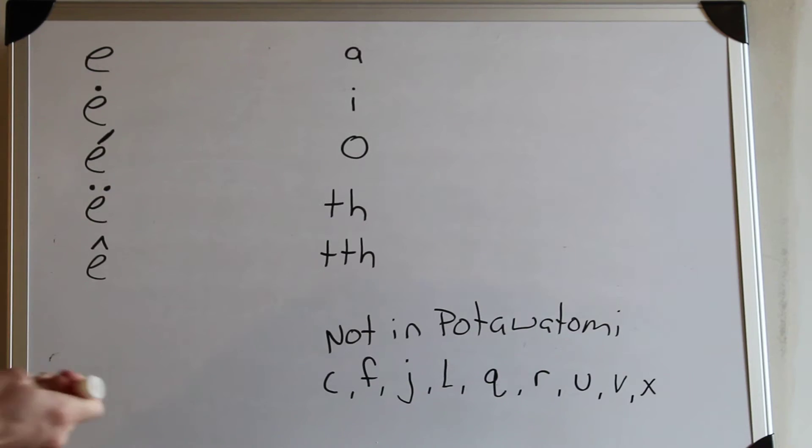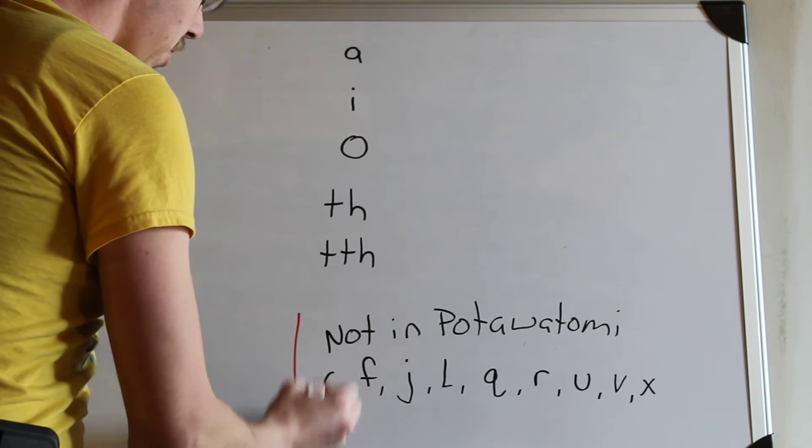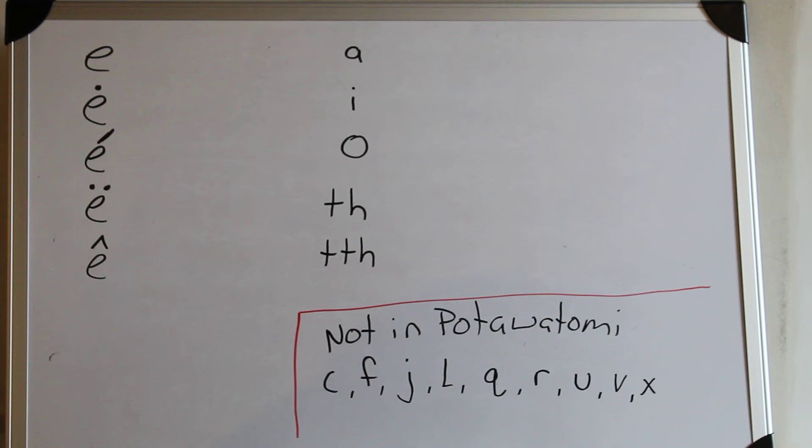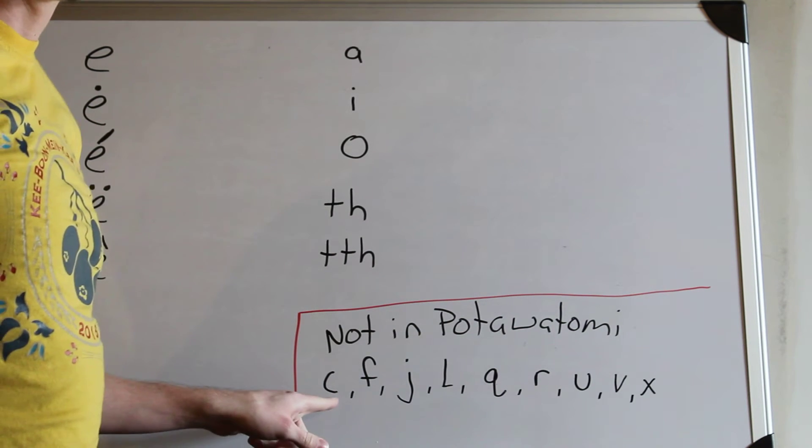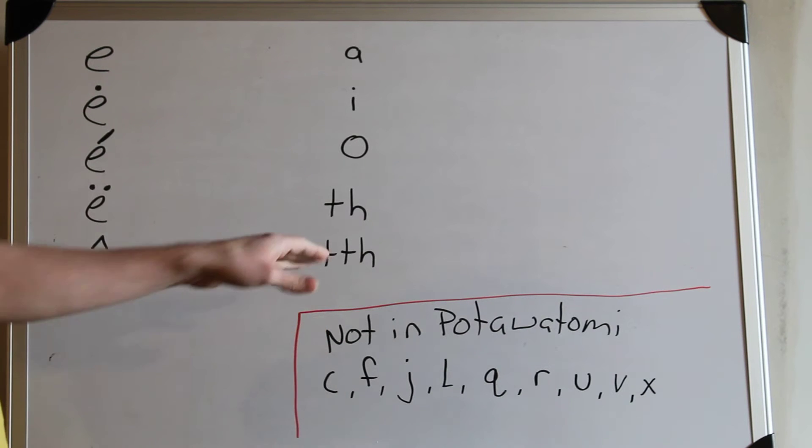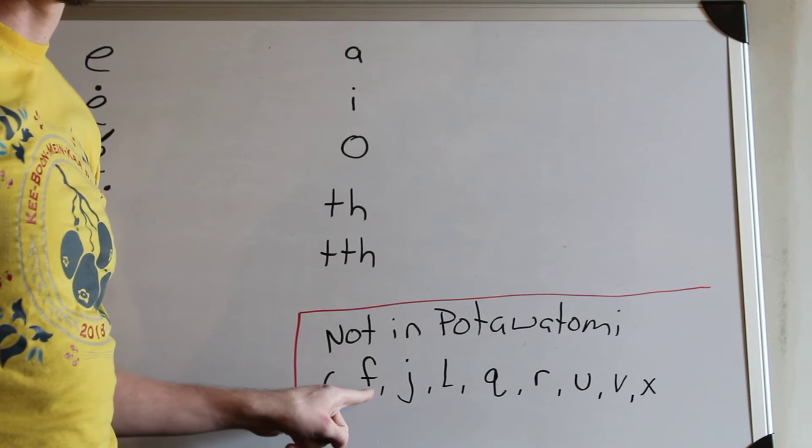So what I'll go over first is the letters that are not in Potawatomi in this writing system. In this writing system we do not have C's because it falls under a different thing that I'll show you here in a minute. In Potawatomi there are no F's.